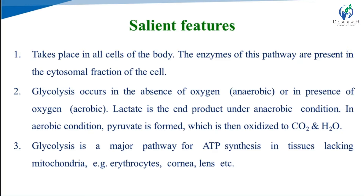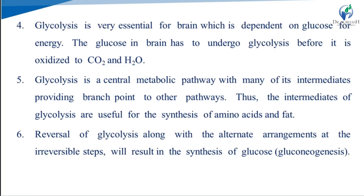Glycolysis is the major pathway for ATP synthesis in tissues lacking mitochondria, such as erythrocytes, cornea, and lens. Glycolysis is also essential for the brain, which depends on glucose for energy. In the brain, glucose undergoes glycolysis before it is oxidized to carbon dioxide and water.